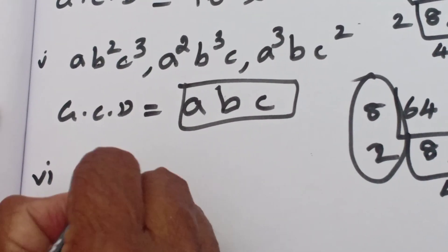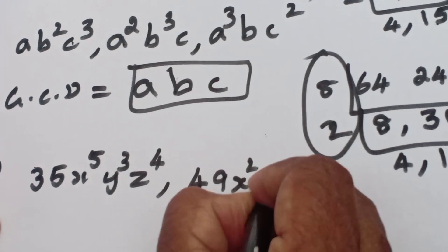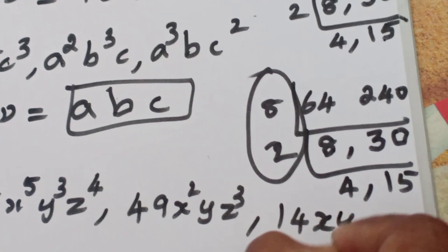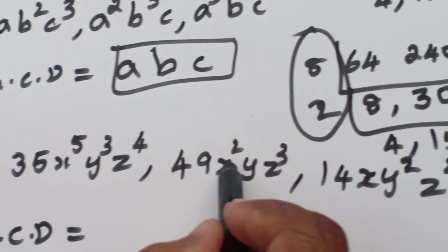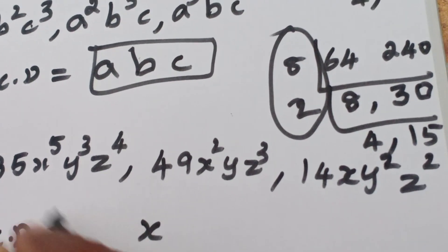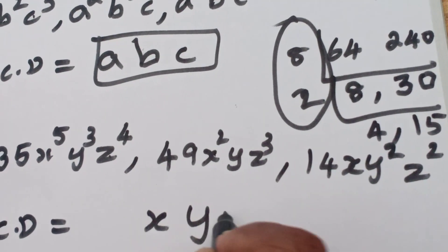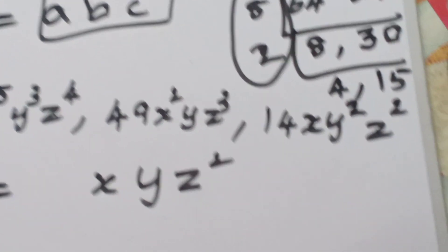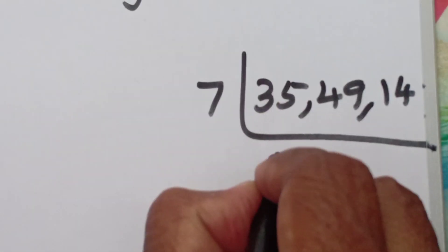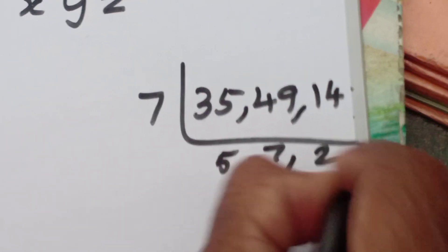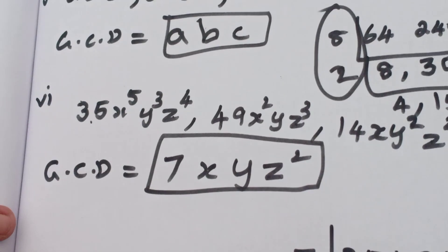Next: 35 x to the power of 5, y, z to the power of 4; 49 x squared, y, z cube; 14 x, y squared, z squared. For the variables: x to the power of 5, x squared, x — GCD is x. Y, y, y squared — GCD is y. Z to the power of 4, z cube, z squared — GCD is z squared. For numbers 35, 49, 14 — which table? Seven. Five sevens are 35, seven sevens are 49, two sevens are 14. No common factor beyond that, so GCD of numbers is 7.